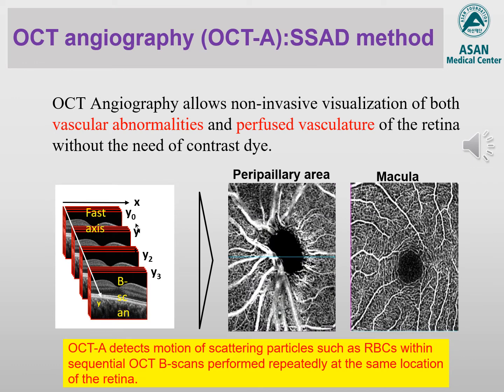Recently, OCT angiography allows non-invasive visualization of both vascular abnormalities and perfused vasculature of the retina, optic nerve head, and deep layer optic nerve head tissues such as the choroid, without the use of contrast dye. For example, with split spectrum amplitude decorrelation angiography — so-called SSADA — OCT angiography detects motion of scattering particles such as red blood cells within sequential OCT B-scans performed repeatedly at the same location of the retina, optic nerve head, or other relevant layers in the eye.